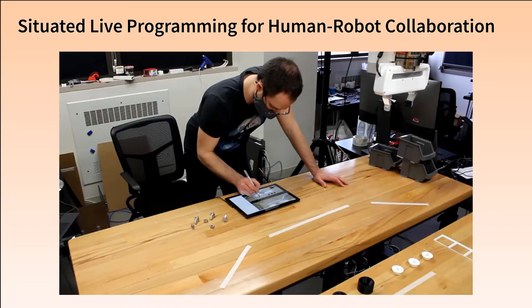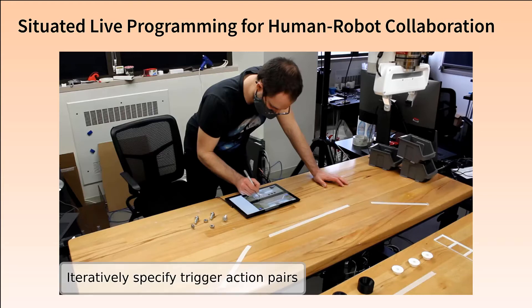In this work, we present a method for programming human-robot collaboration. Our method allows users to create reactive robot programs by iteratively specifying trigger action pairs based on a live view of the environment.